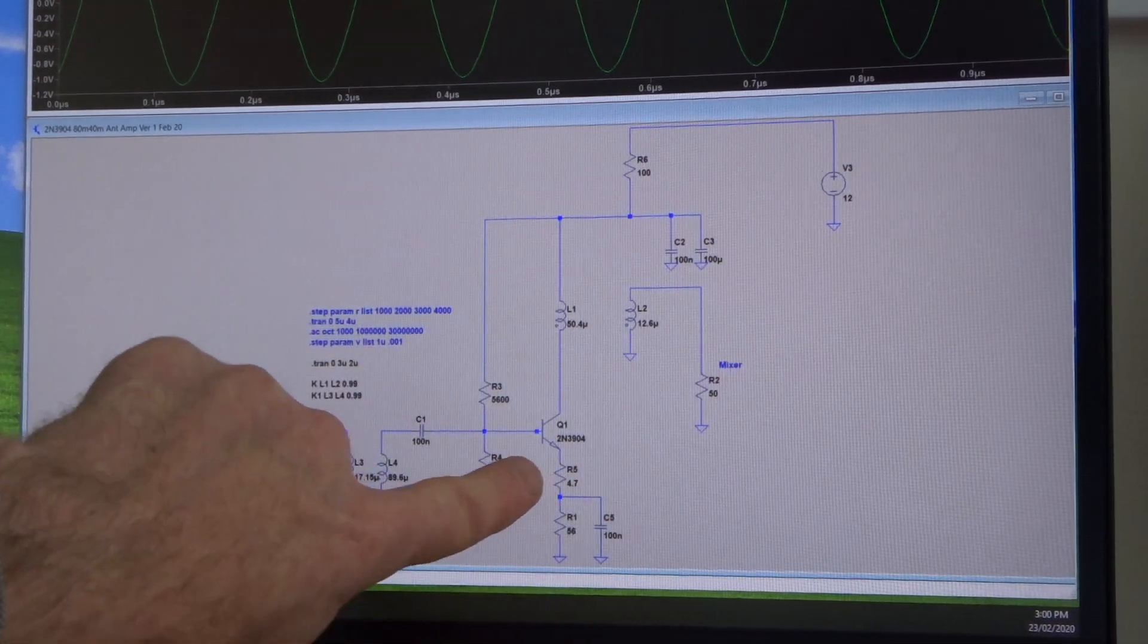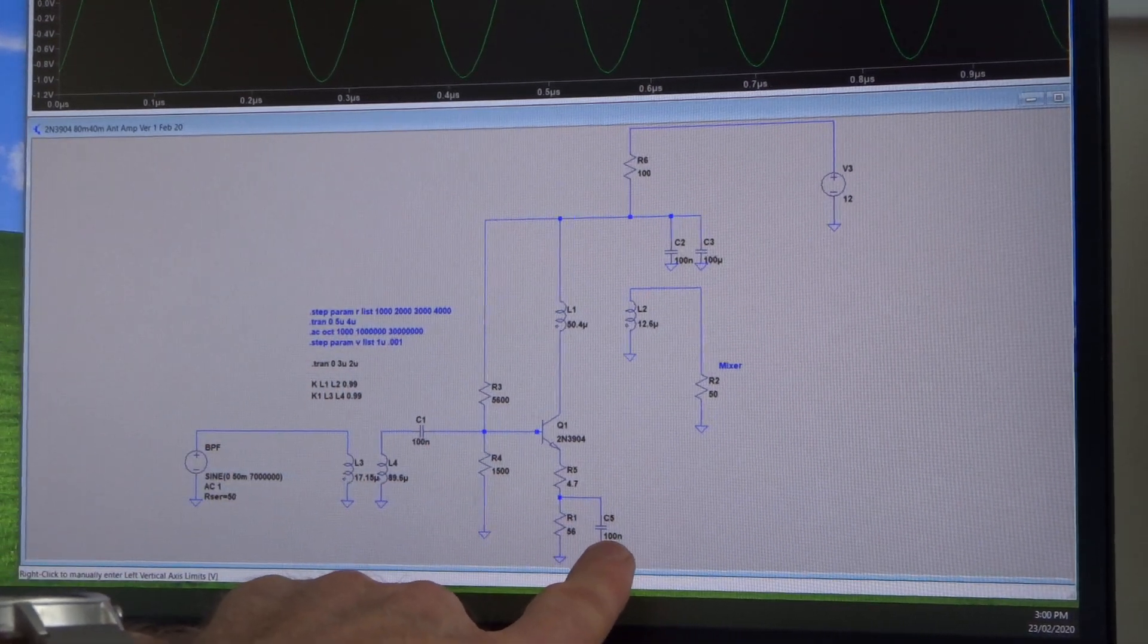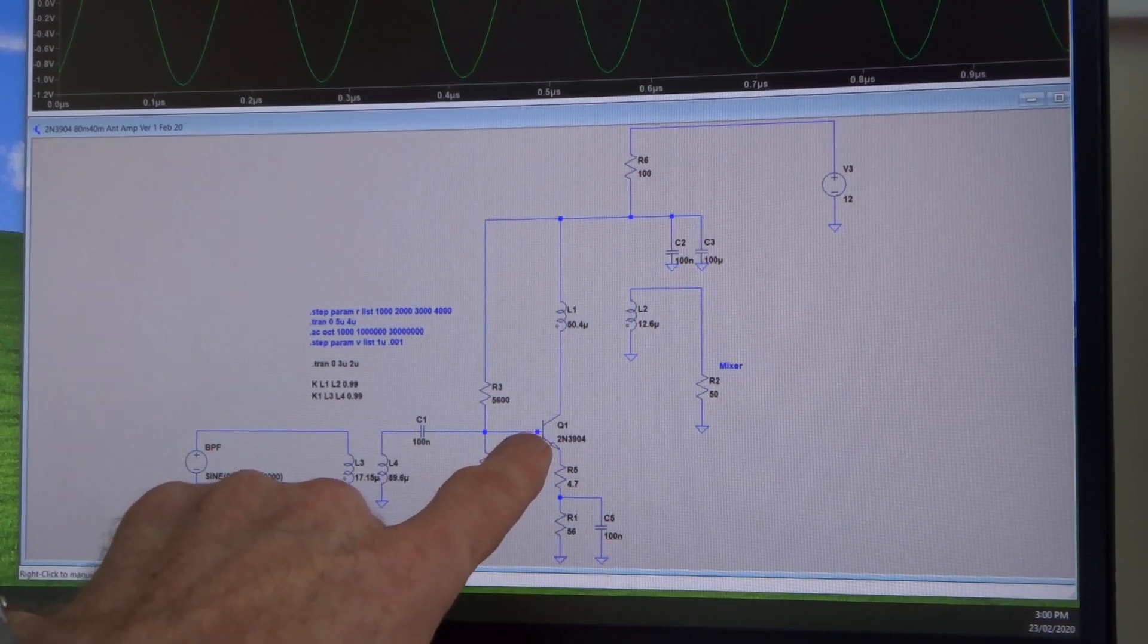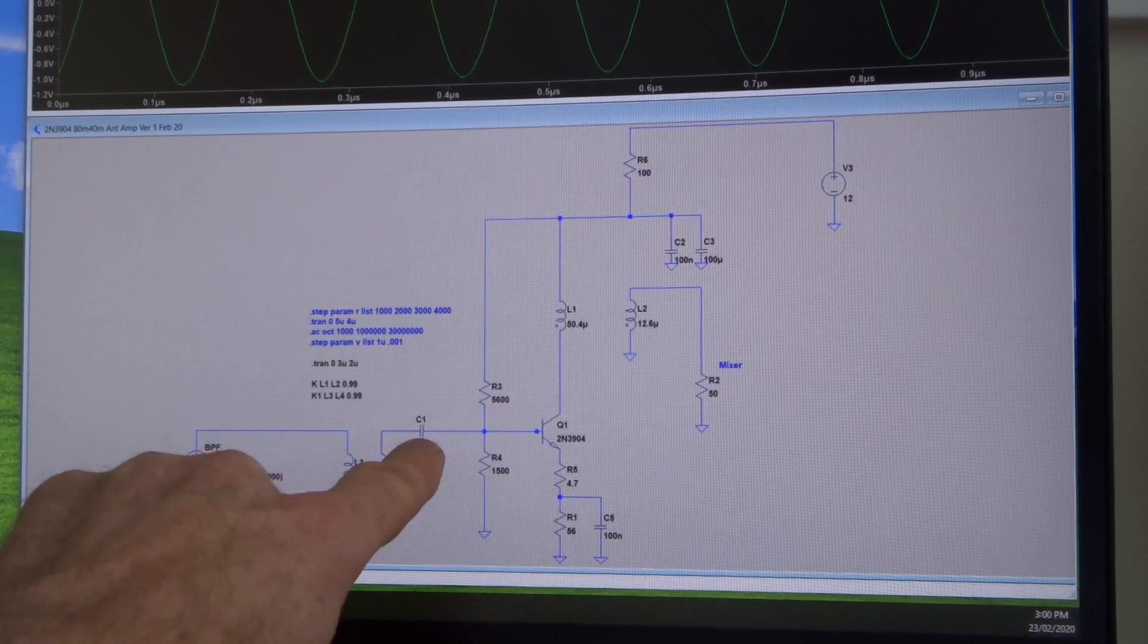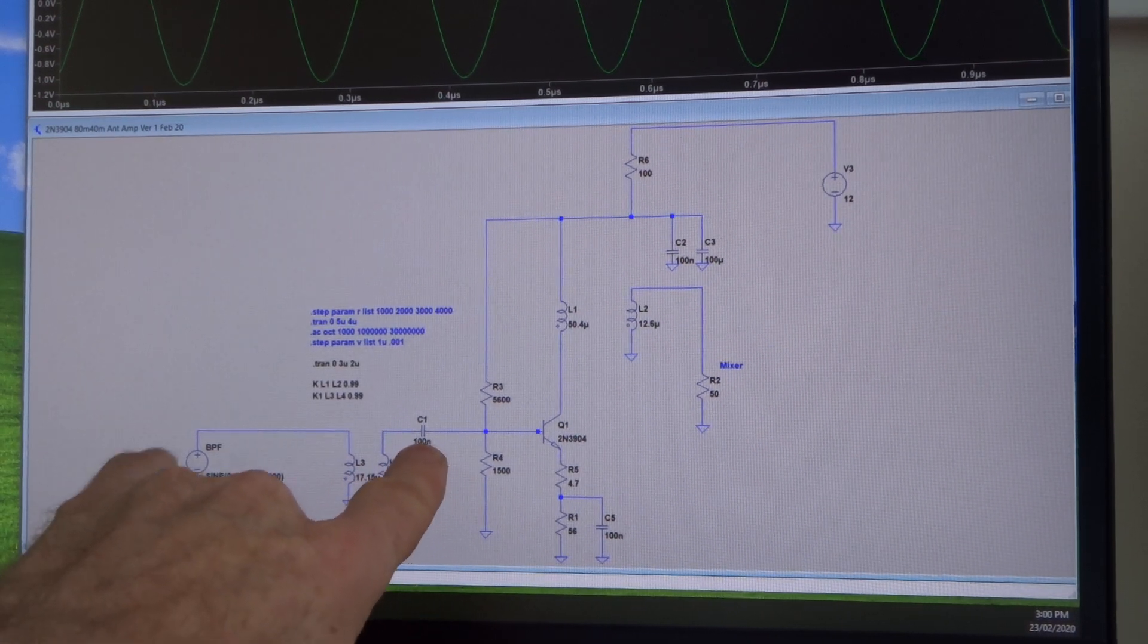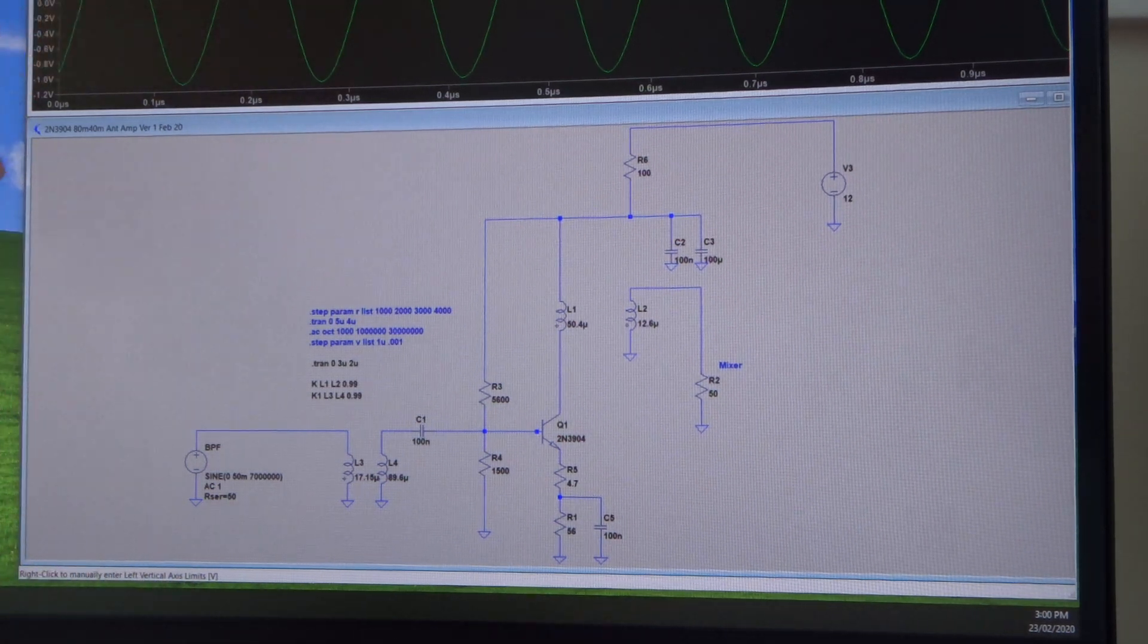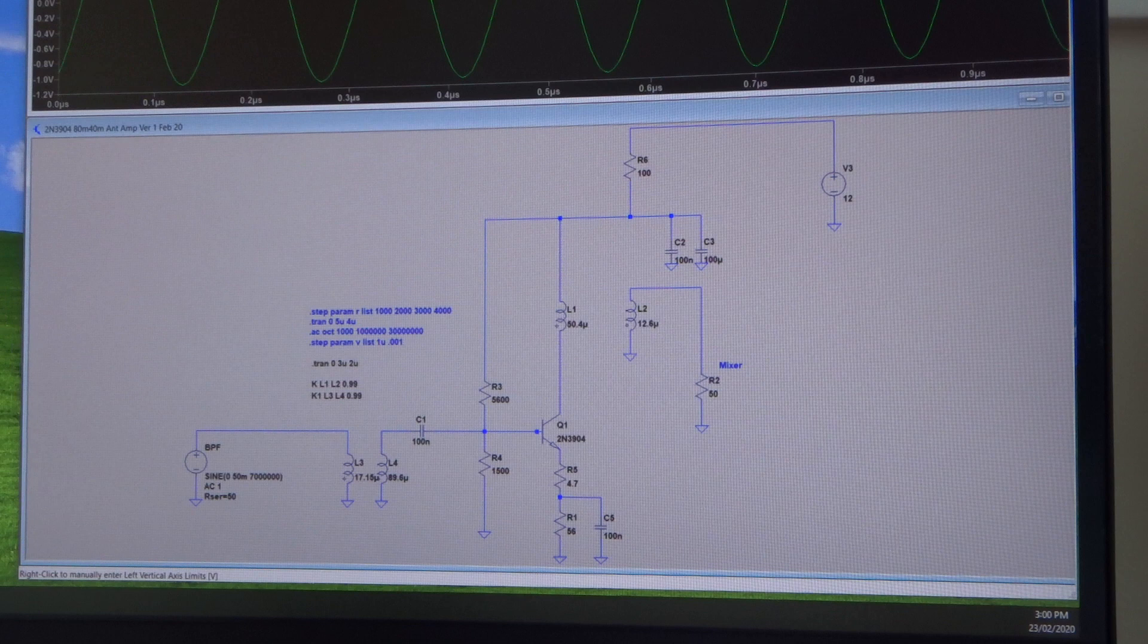Down here you can see the 4.7 ohms, the unbypassed portion of the emitter resistor, and then that 56 ohm which is bypassed with a 100 nanofarad capacitor. The input capacitor is also 100 nanofarads - we need that because we don't want that 1.9 volts sitting here being shorted to earth through that transformer winding. So we need that capacitor as DC isolation. And 100 nanofarads at our frequency looks like a dead short to AC.